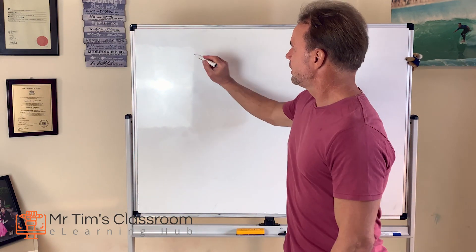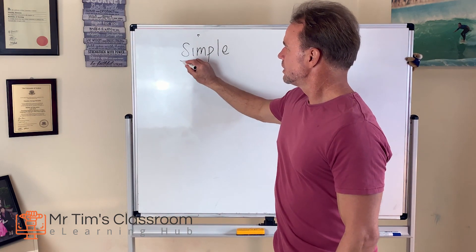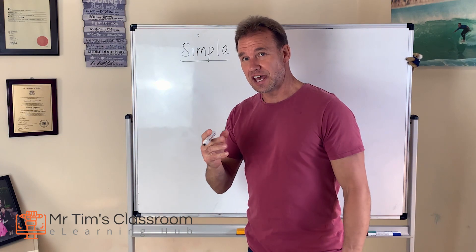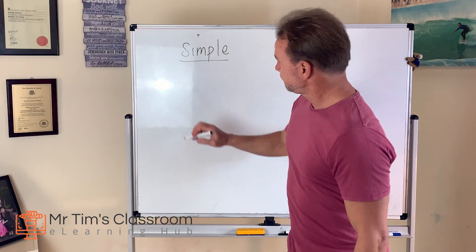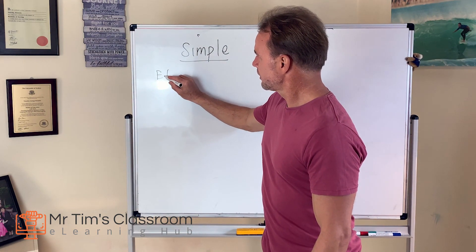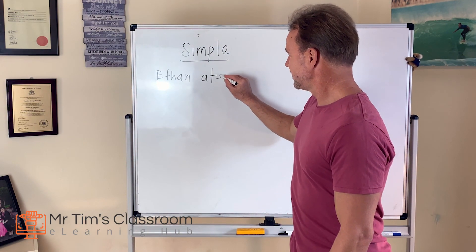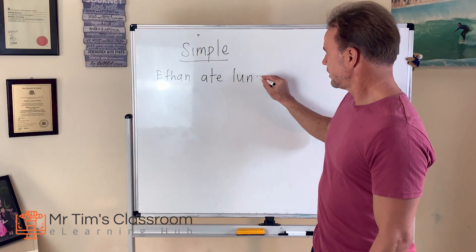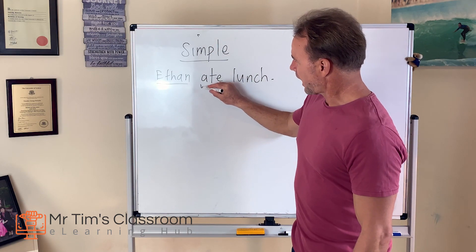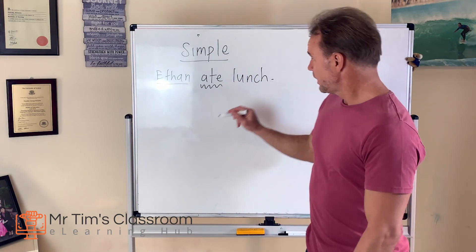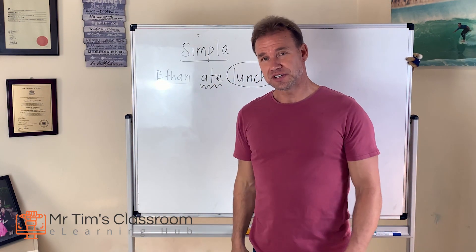The first one is called a simple sentence. A simple sentence has how many ideas? One idea. So, for example, we could say, 'Ethan' — there's our subject — 'ate lunch.' Ethan is the subject, 'ate' is the verb, and 'lunch' is called the object. This, boys and girls, is a simple sentence.